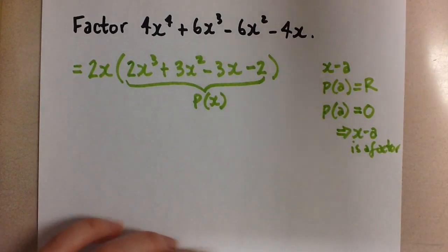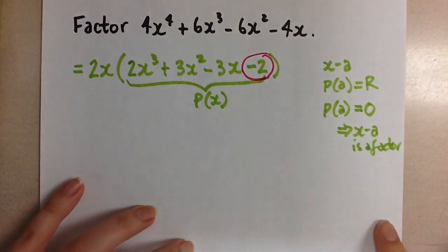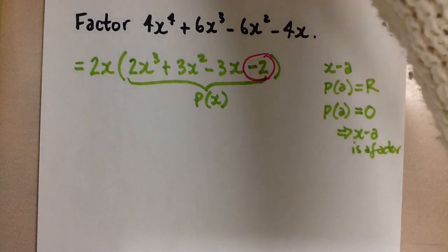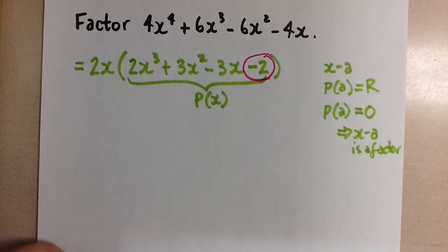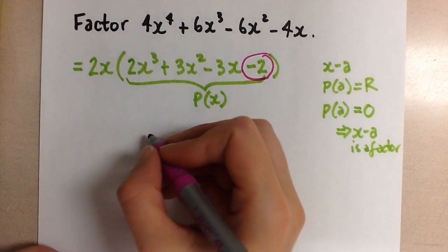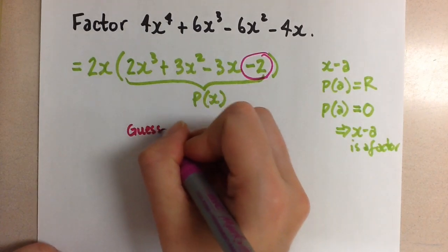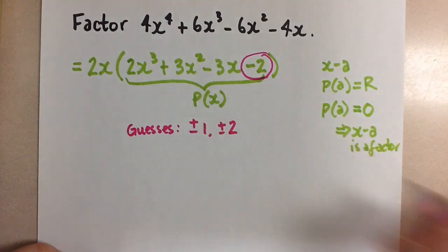To do that, we're going to look at the last constant term of the polynomial. And the factors of that number are what's going to lead to the guesses for this divisor that we're looking for. So the factors will be our guesses, and they are positive and negative 1, and positive and negative 2.